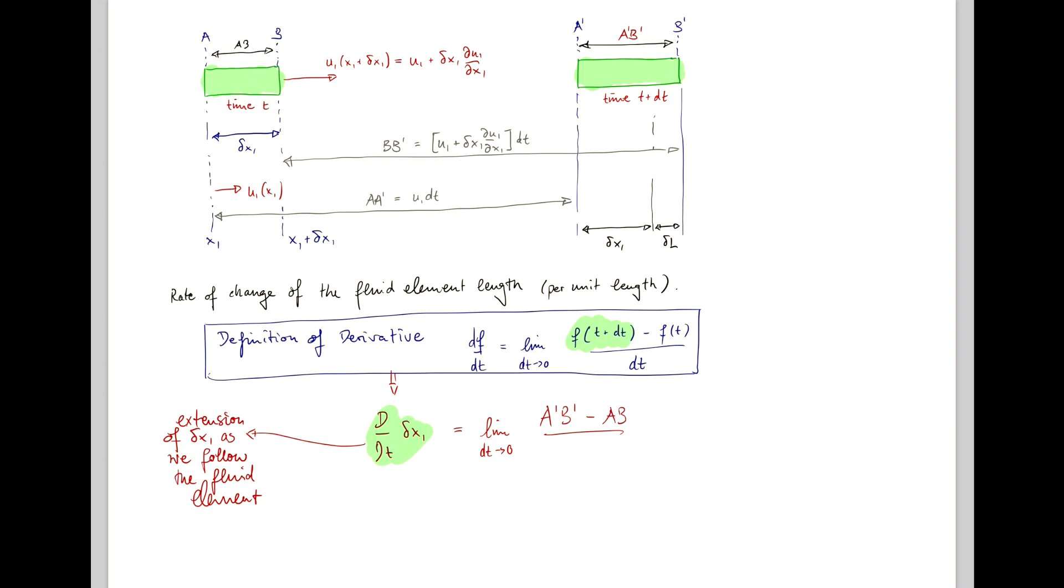divided by dt. And since we're interested in the relative extension, we divide by delta x1. So 1 over delta x1 d/dt of delta x1.